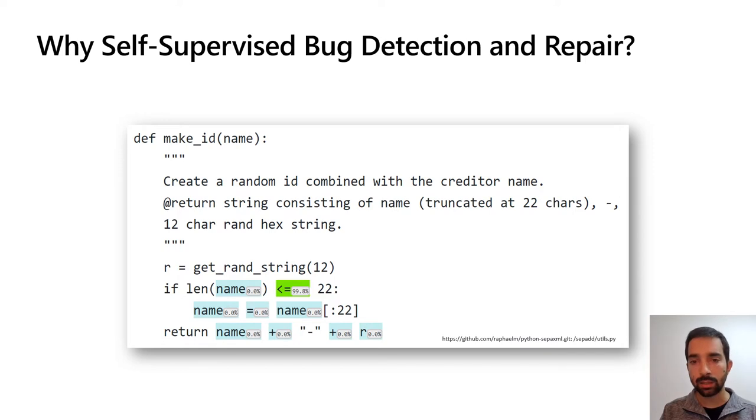Finding and fixing bugs in code, such as the one shown here in green, is a task that requires strong reasoning capabilities and is hard to perform just by learning to mimic existing code.